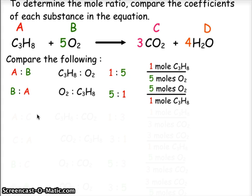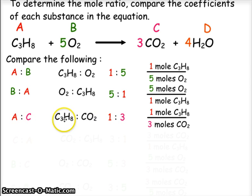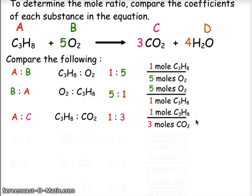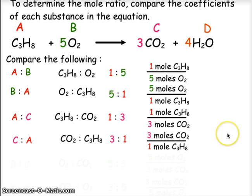Now compare A to C — propane to carbon dioxide. This is a one-to-three ratio, and the conversion factor is one mole of propane over three moles of carbon dioxide. Comparing C to A — carbon dioxide to propane — gives a three-to-one ratio, with a conversion factor of three moles of CO2 over one mole of propane.